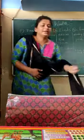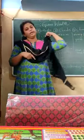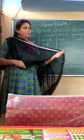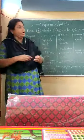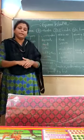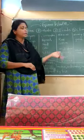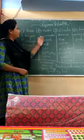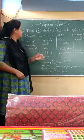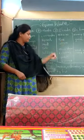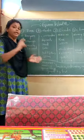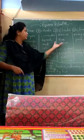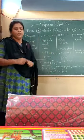Hi children, welcome back. I hope you all are doing well and enjoying these videos. In the last video we discussed about green wealth and how it is divided into five steps: trees, herbs, shrubs, climbers, and creepers. We also discussed briefly about trees, herbs, and shrubs. In this video we will start from the shrubs.